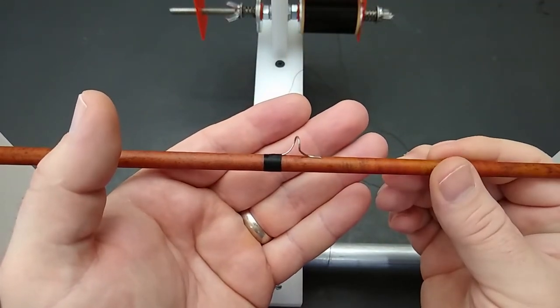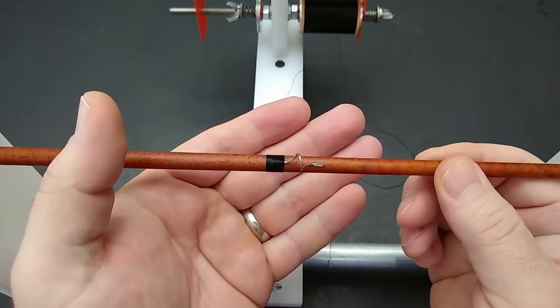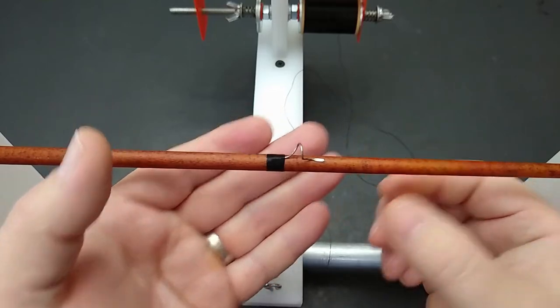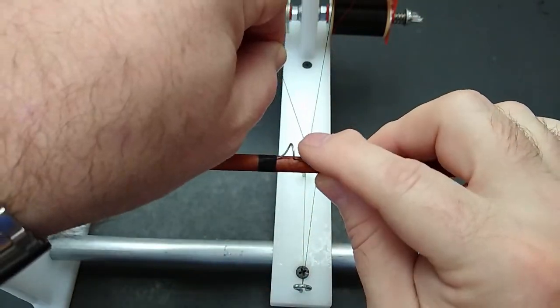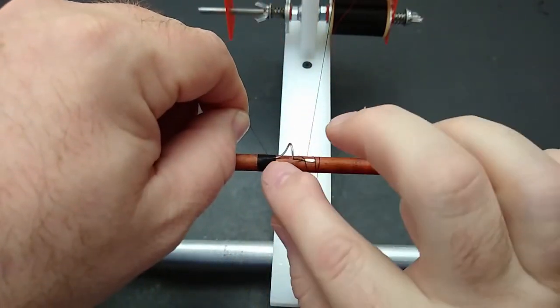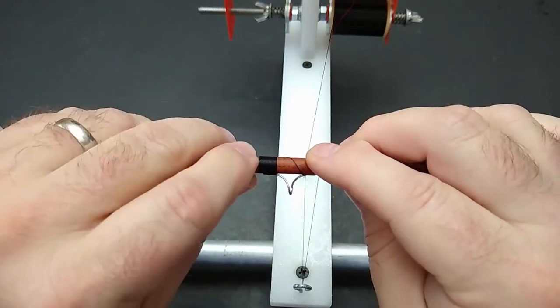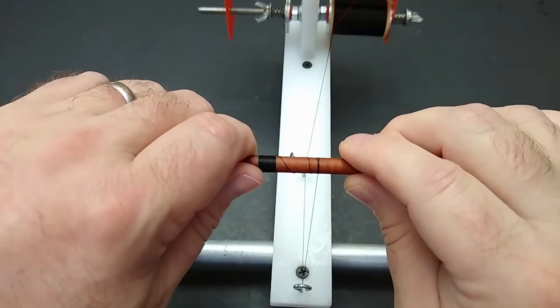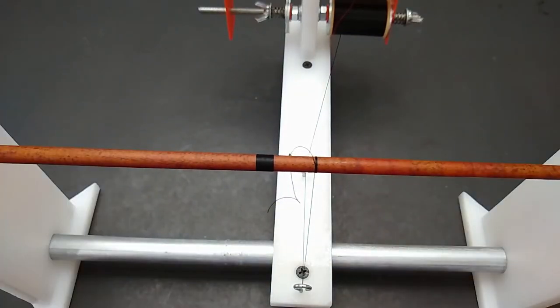Now pretty much everything is done that's needed to secure this guide to the blank. It's not going to move on you at this point unless you want it to move so you can go ahead and wrap the other guide foot as you normally would and again when I insert my pull through loop I like to put about 10 turns on it or so and then I like to trim it really close, the tag end really close to the pull through loop.